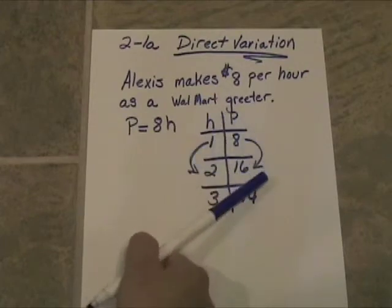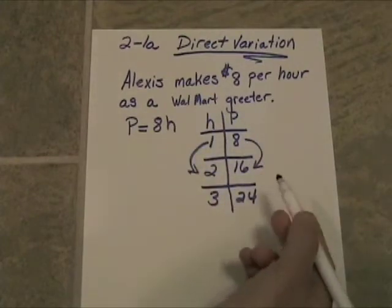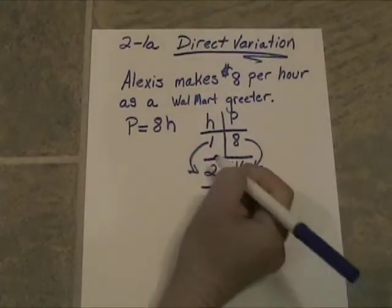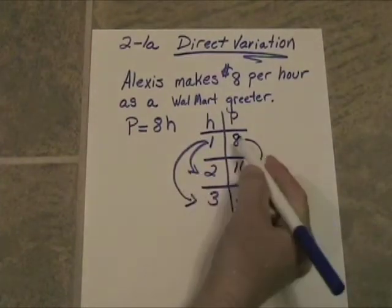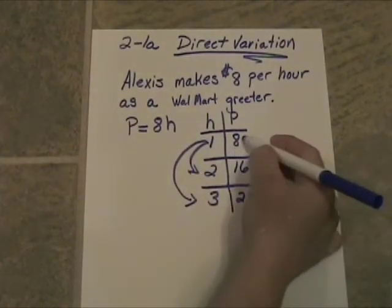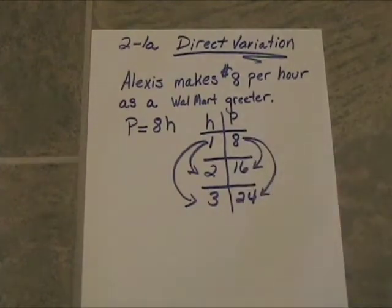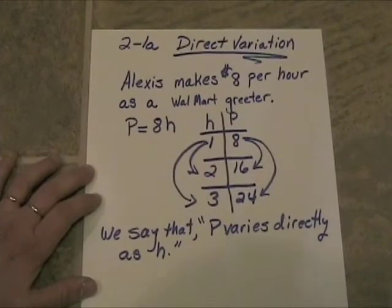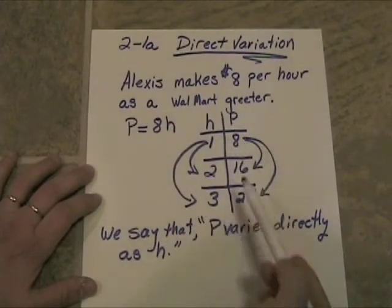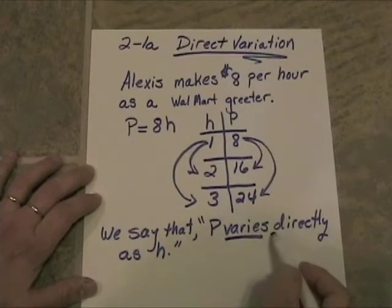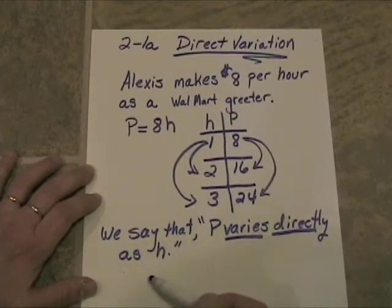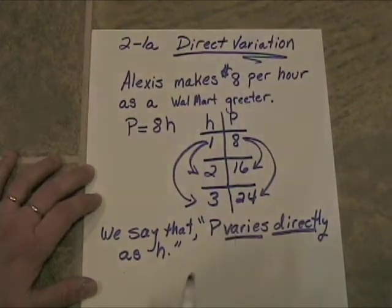The same thing happens here. If we triple the number of hours, then the pay should get tripled. And it certainly does. We say that P varies directly as H. So basically what's happening to H is happening to P.